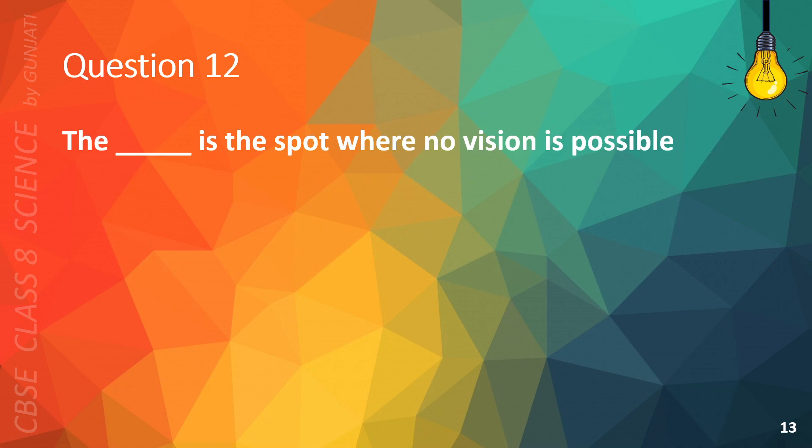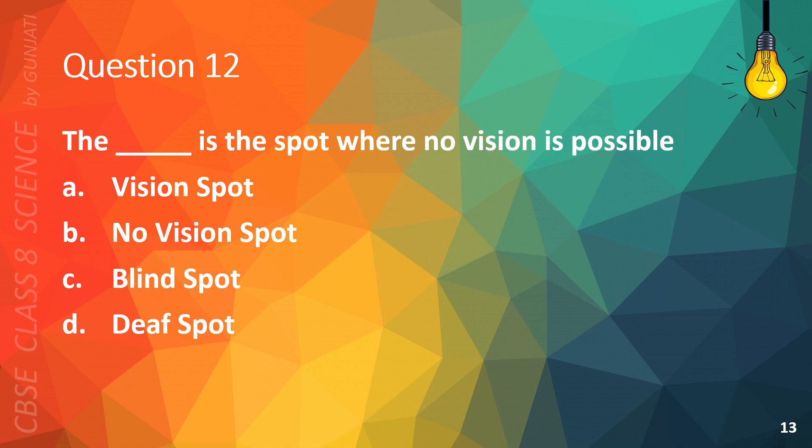Question 12. The blank is the spot where no vision is possible. A. vision spot, B. no vision spot, C. blind spot, or D. deaf spot. The correct answer is C, blind spot.